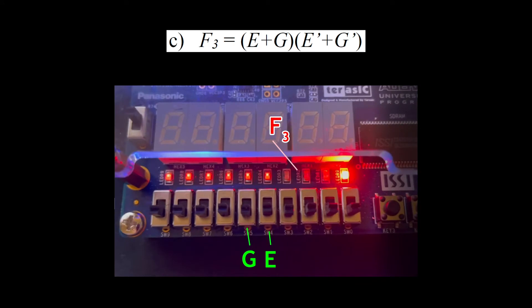For F3, switch 4 represents input E, switch 5 represents input G, and LED R2 represents output F3.